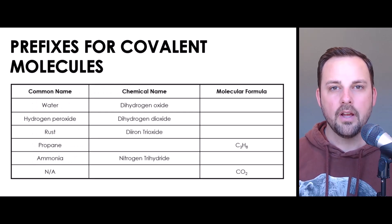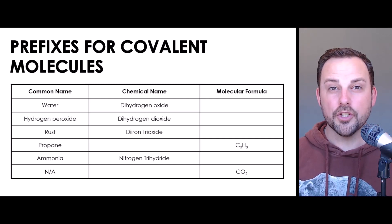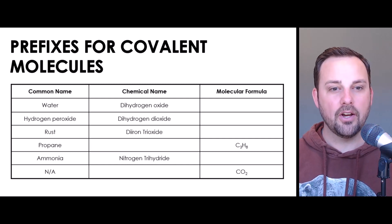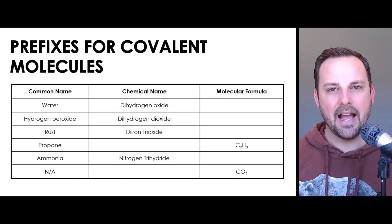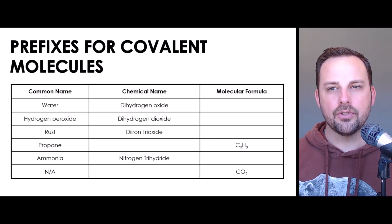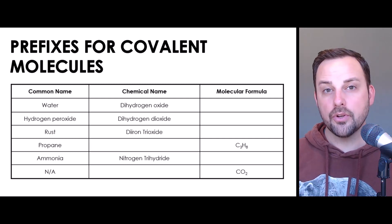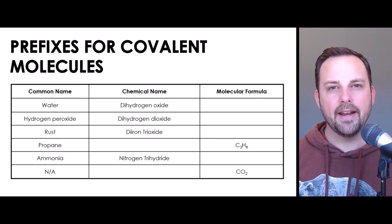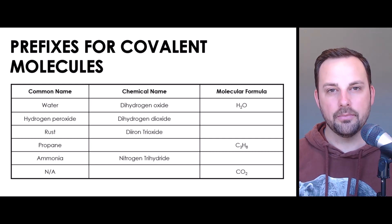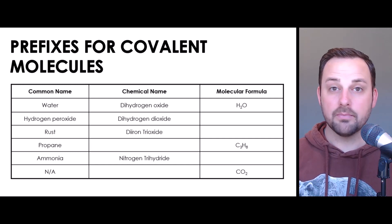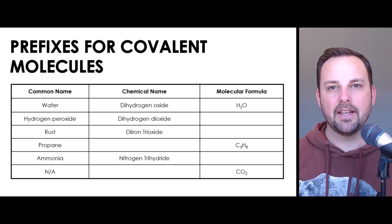We'll start with an easy one: water. Water is a molecule formed by covalent bonding. We usually just call it water, but if we were being more specific using a chemical name we might call it dihydrogen oxide. The prefix di means there are two hydrogen atoms, and oxide refers to oxygen. There's no prefix on oxide, which tells us there's only one oxygen atom. The molecular formula for water is H2O — the subscript 2 agrees with the chemical name that there are two atoms of hydrogen, and the O by itself means there's only one oxygen atom.